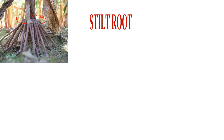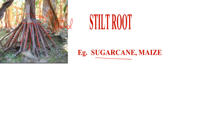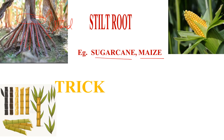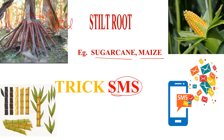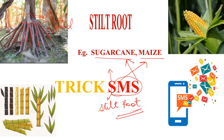Next are stilt roots. Stilt roots grow from the lowermost node of the stem, providing additional support so the plant can stand properly and not fall. This condition is shown by sugarcane and maize. The trick for this is very simple — SMS. From 'S' it's stilt roots, from 'M' it's maize, and from 'S' it's sugarcane.